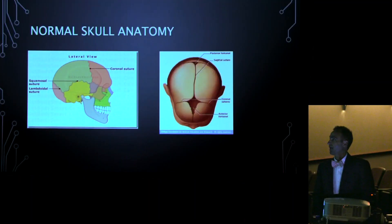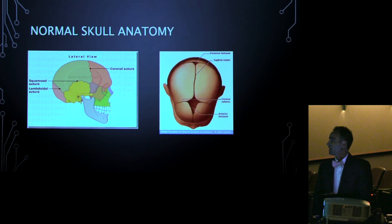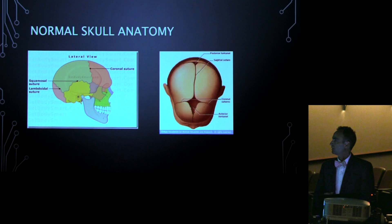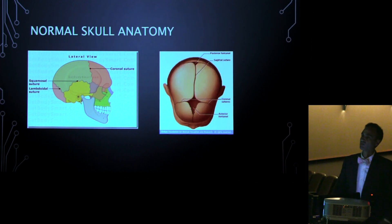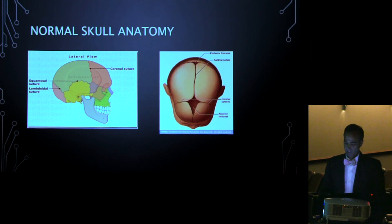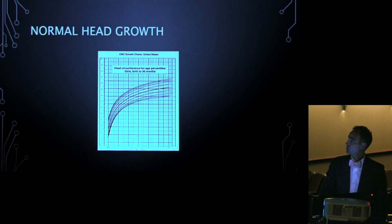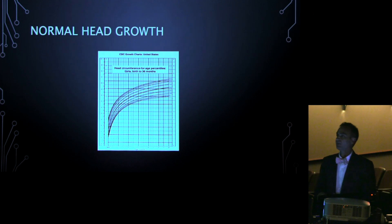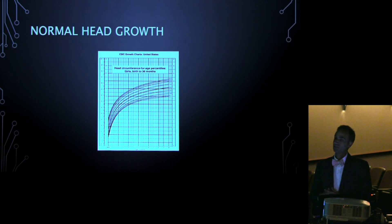This is normal skull anatomy. In the skull, there are sutures, which are the growth plates of the skull. There are major sutures — the coronal sutures, sagittal sutures, and lambdoid suture — as well as some minor ones like squamosal and occipital mastoid. When the head is growing rapidly in the first year of life, driven by brain growth, skull growth is dictated by brain growth and you get growth perpendicular to the sutures.